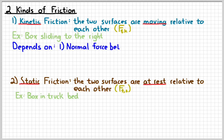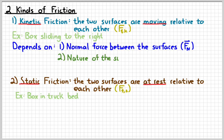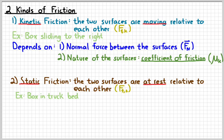The force of kinetic friction depends on two things: the normal force between the surfaces (F_N), meaning how hard the two surfaces are pressed together — think of pressing harder when erasing a dark pencil mark — and the nature of the surfaces, meaning how rough they are. We quantify that with the coefficient of friction, symbol mu subscript K. The equation is: kinetic friction equals mu times the normal force. That's always going to be true.